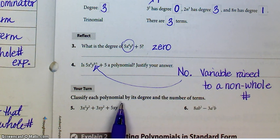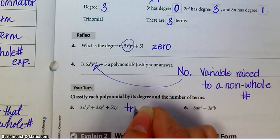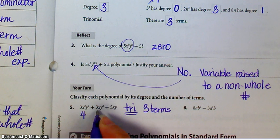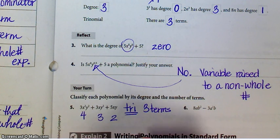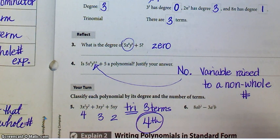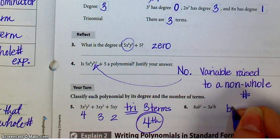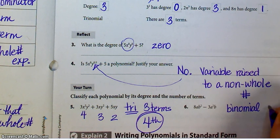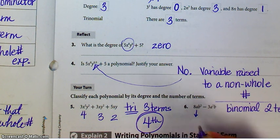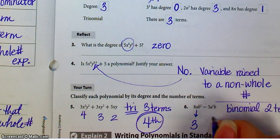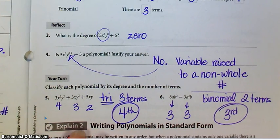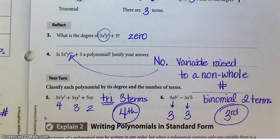Here are a couple of things to practice: classify each polynomial by its degree and number of terms. The first has three terms, so it's a trinomial. The highest degree term is a fourth degree term, followed by a third degree and a second degree term. So this is a fourth degree trinomial. The second: 8ab² minus 3a²b has two terms, making it a binomial. The first term has degree 1 + 2 = 3, the second has degree 2 + 1 = 3. Highest degree is 3, so it's a third degree binomial. Both qualify as polynomials, because polynomials is a more general term.